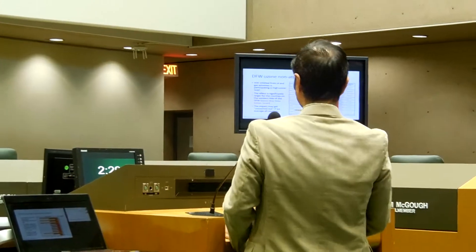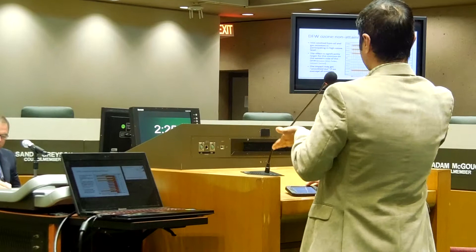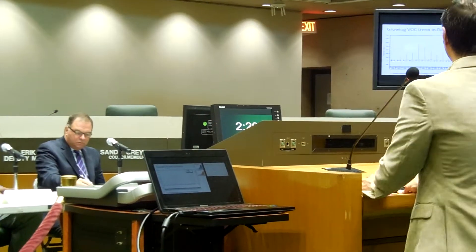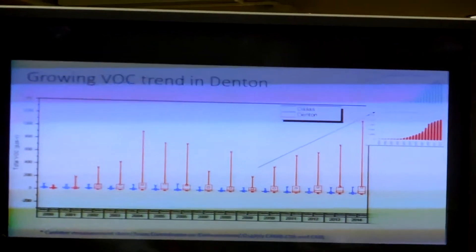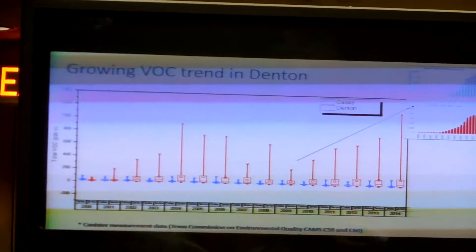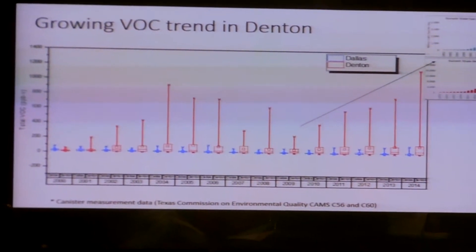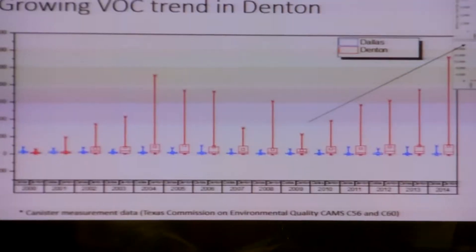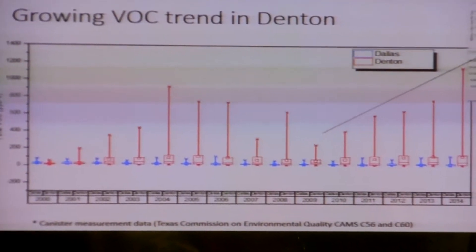Because the impact of VOCs is very local, it can be smoothed out if you only consider average numbers across a large area. This graph shows a comparison between VOC trends in Dallas versus Denton. The blue line is Dallas since 2014 and the red one is Denton. Considering the number of people living in these two cities and the traffic flow, the difference is really significant and quite shocking.